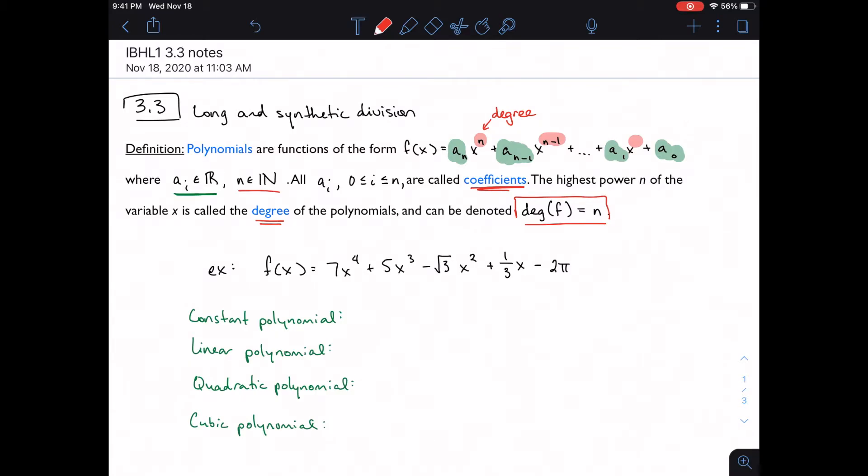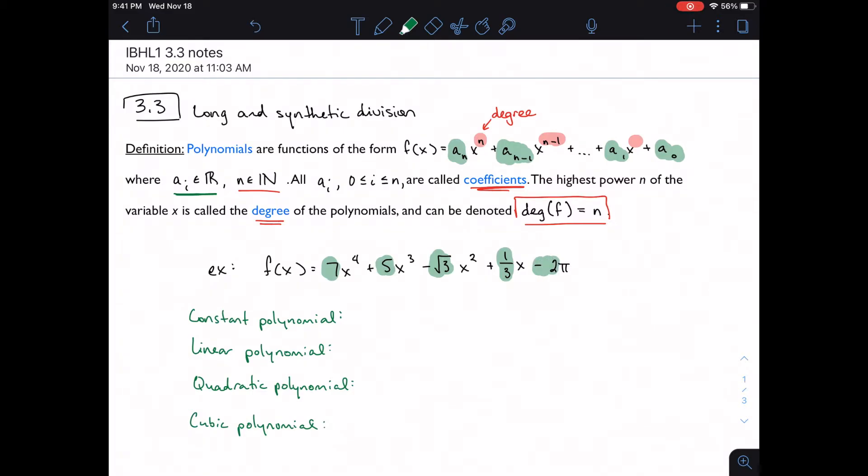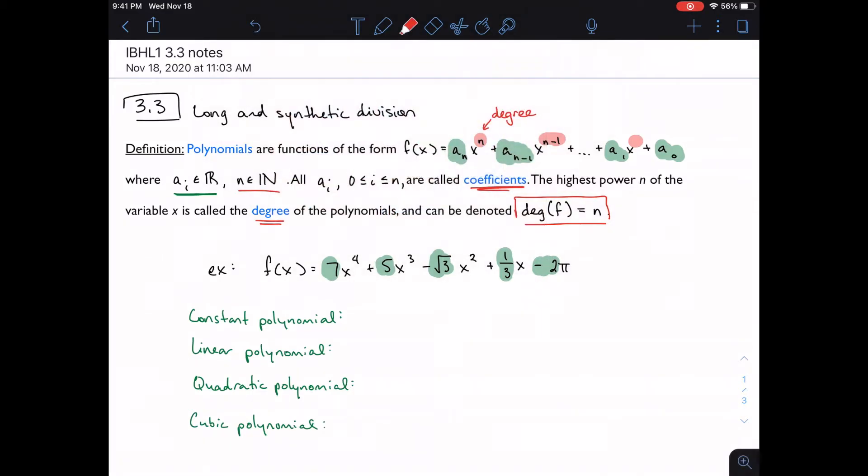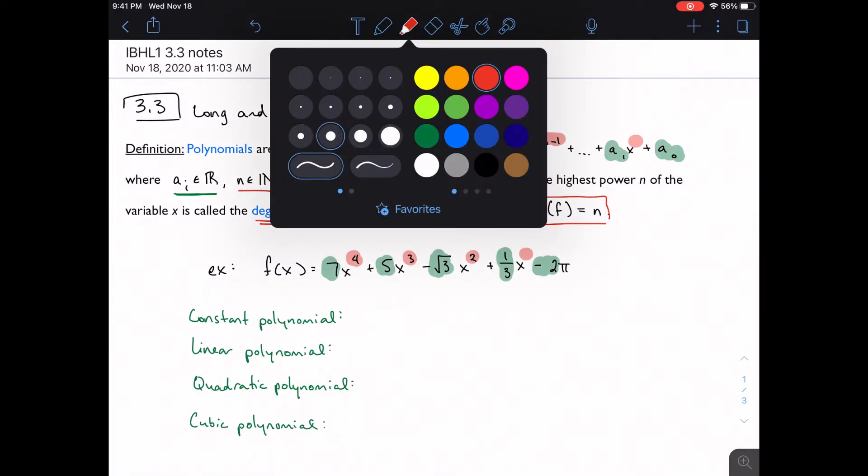So for example, here's my polynomial, right? All of my coefficients are real numbers. All of my powers are whole numbers. Oh, that pi is part of the coefficient too.